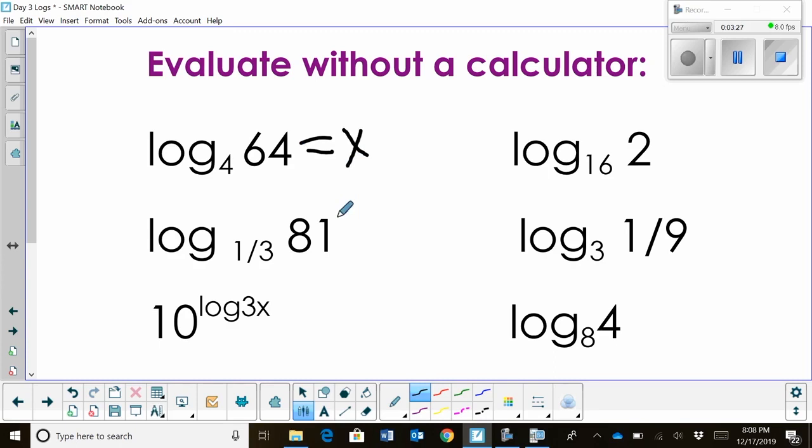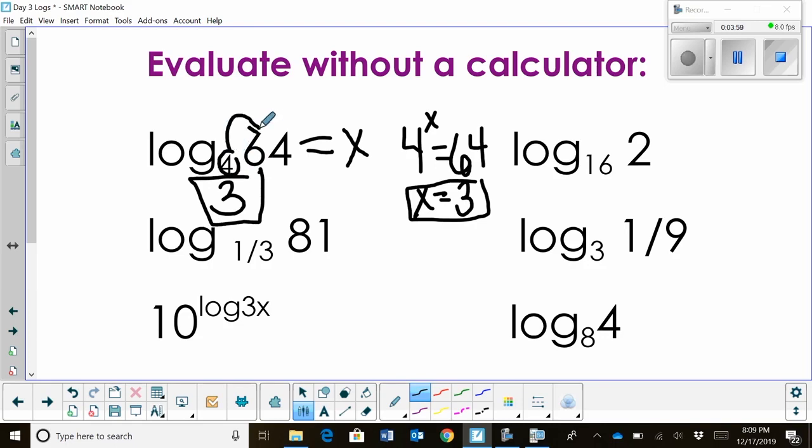So I'm creating an equation out of an expression, but it's just there to help me solve it. Now I'm going to rewrite it as 4 to the x power is equal to 64. And 4 to what power is 64? Well, x is 3 because 4 cubed is 64. So I know that log base 4 of 64 is just 3. And that simplifies.